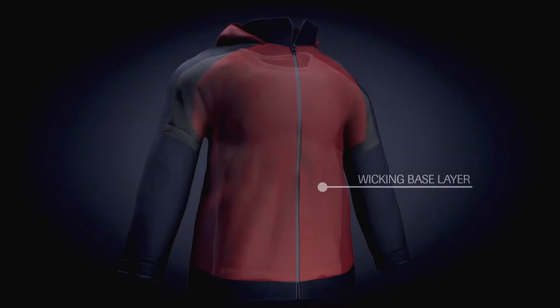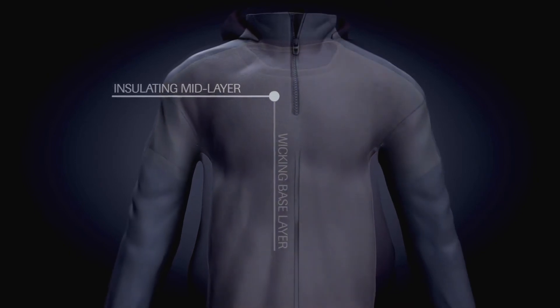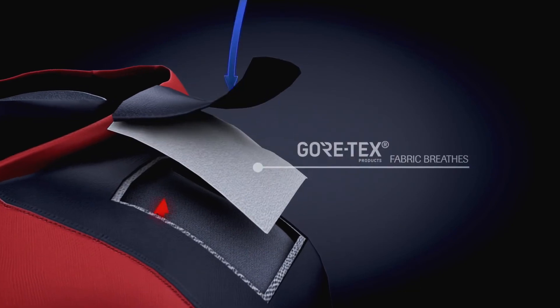When combined with wicking base layers that move sweat vapor away from the skin and insulating mid-layers that maintain warmth, Gore-Tex fabric still breathes, releasing internal moisture pressure generated through exertion.